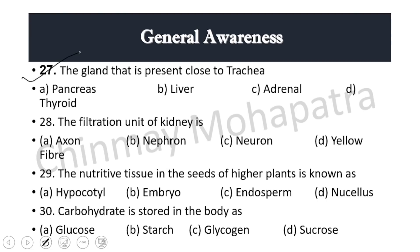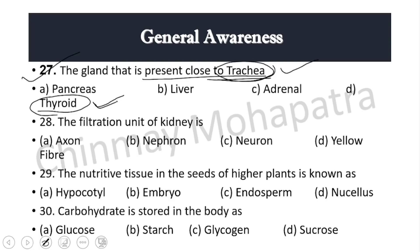Question 27: The gland that is present close to the trachea — the windpipe. The right answer is the thyroid gland. The thyroid gland is located behind the trachea, i.e., windpipe.